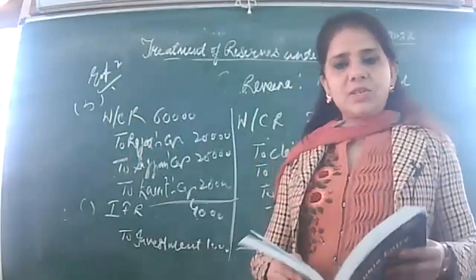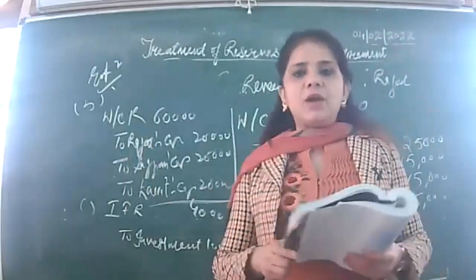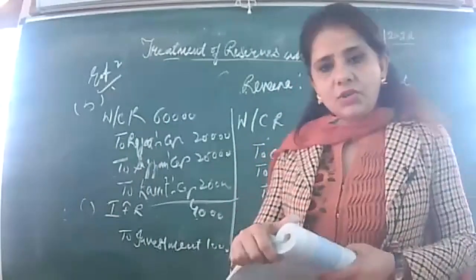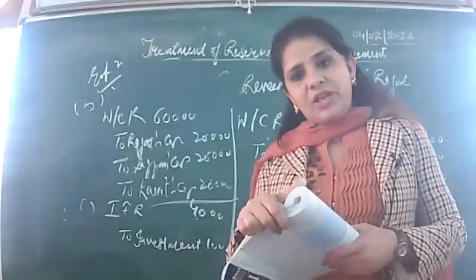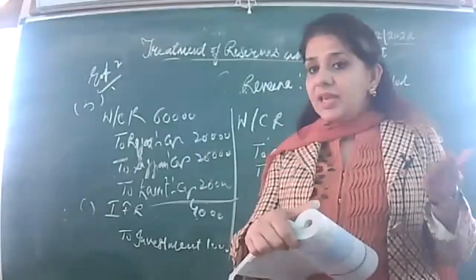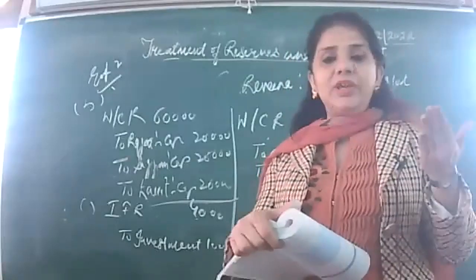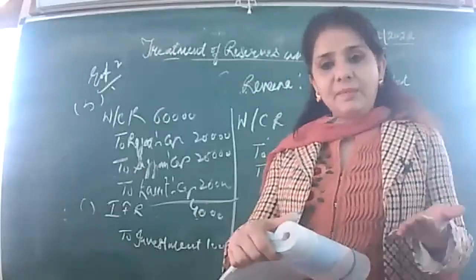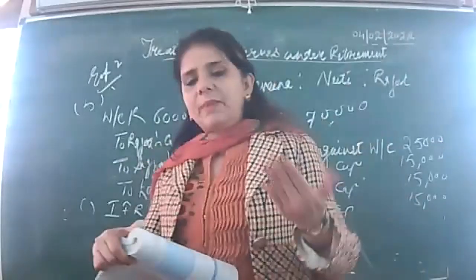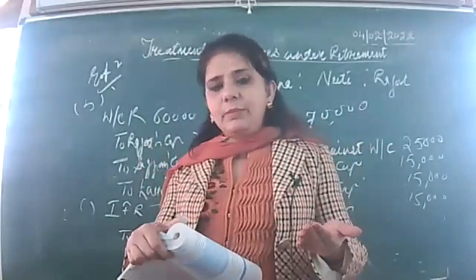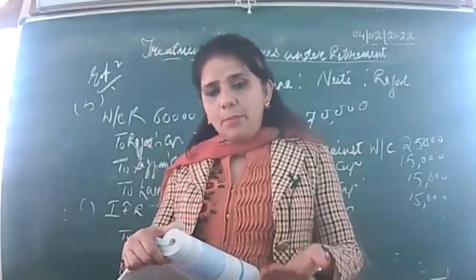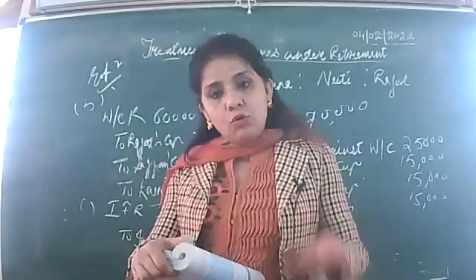Next, how do we calculate the amount to be paid to the retiring partner? For that purpose we always prepare his ledger account — his capital account. On the same pattern as in admission, where we prepared all partners' capital accounts including the incoming partner, here also we prepare capital accounts of all partners including the outgoing partner.